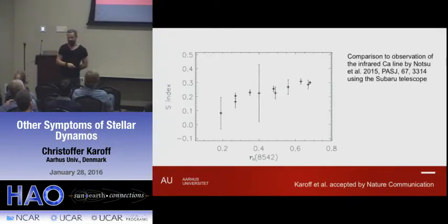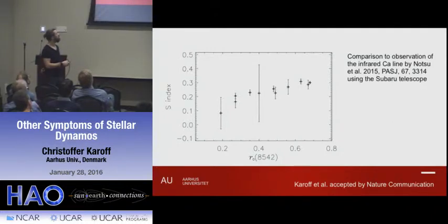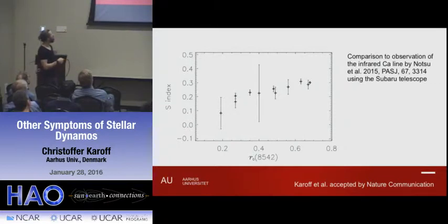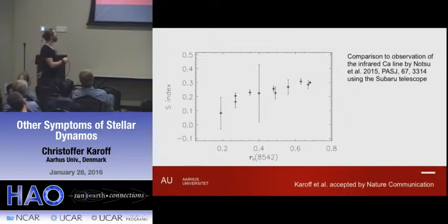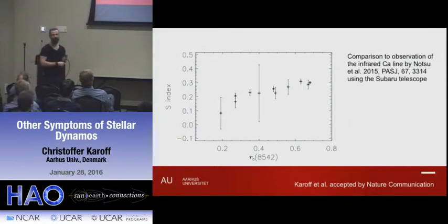To test whether I was actually measuring the right thing, I compared my observations of chromospheric emission — the S-index — with other observations in the literature. One study was done by Notsu from Japan, who looked at superflares and measured the chromospheric emission not in the ultraviolet calcium H and K line but in the infrared calcium line. Comparing my measurements of the same stars to his measurements, within the error bars there's a relatively nice correlation, which assured me I'm on the right track for measuring chromospheric emission.